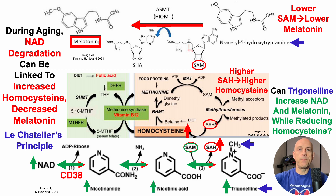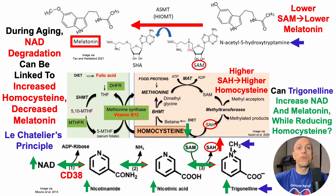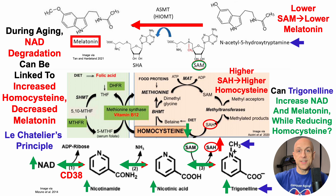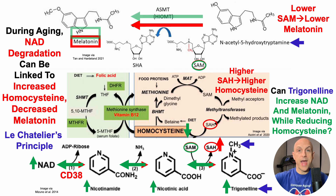Also during this process, by converting trigonelline into nicotinic acid, S-adenosyl homocysteine is consumed. With that being lower, we should expect homocysteine to also be lower. So increasing trigonelline may lead to a reduction in homocysteine. And in the conversion of trigonelline into nicotinic acid, S-adenosylmethionine levels would be increased as that methyl group is transferred from trigonelline to S-adenosyl homocysteine, thereby forming SAM. With SAM increased, we should get a shift toward increased melatonin.